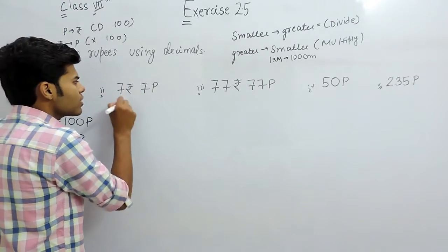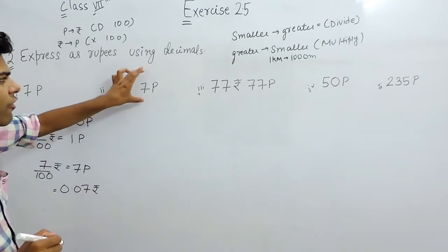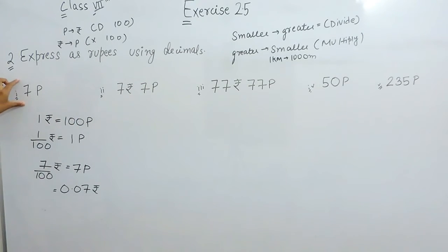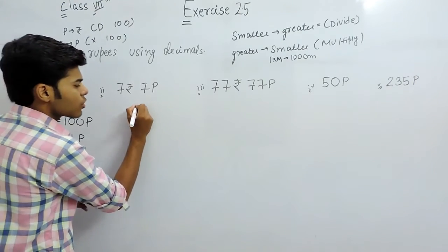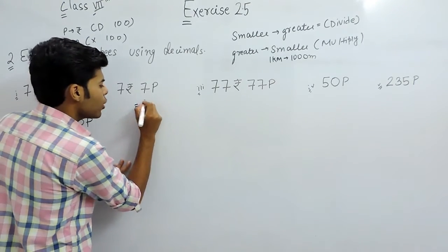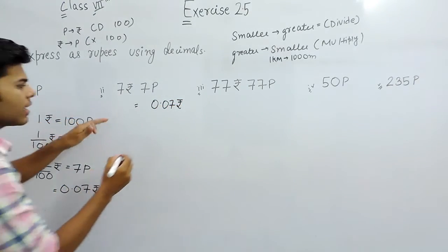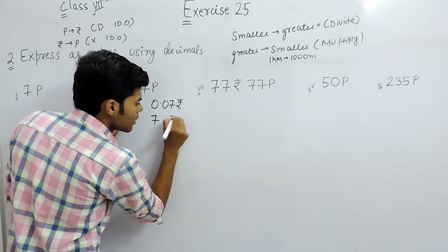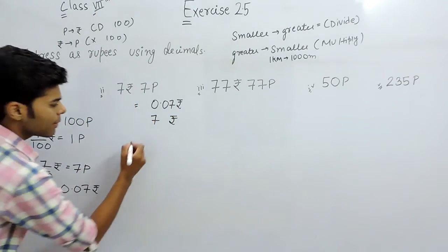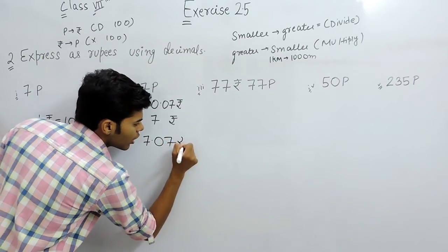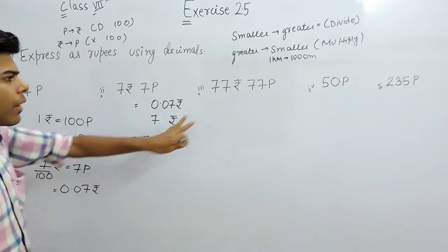In this one, 7 is already in rupees. We will check for this. And we all know that we have solved here, 7 paisa is equal to 0.07 rupees. So that will be 0.07 rupees and 7 rupees were always there. Now we will add them. It will give us 7.07 rupees.